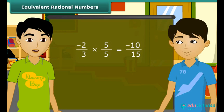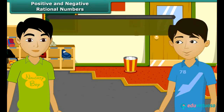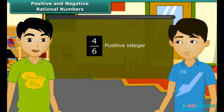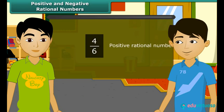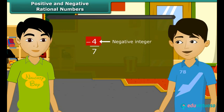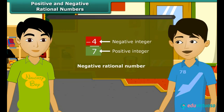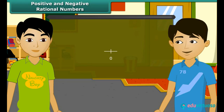Do you know what do we call a rational number which has positive numerator and positive denominator? That rational number is called a positive rational number, I guess. And what are the negative rational numbers? When the numerator is a negative integer and the denominator is a positive integer — for example, minus 4 by 7.